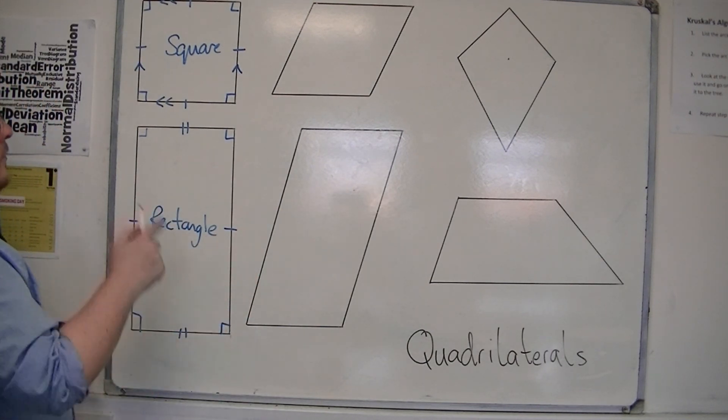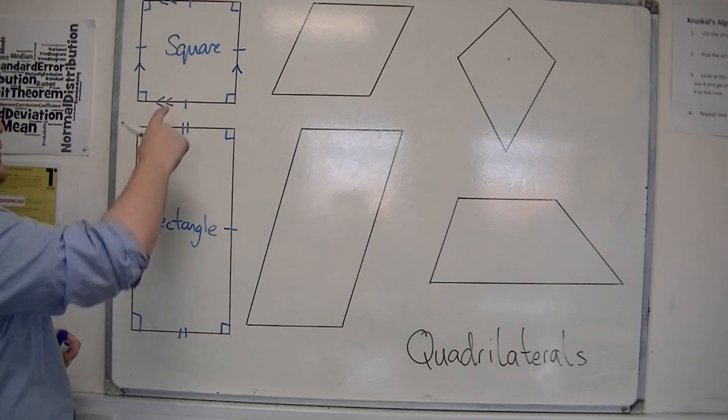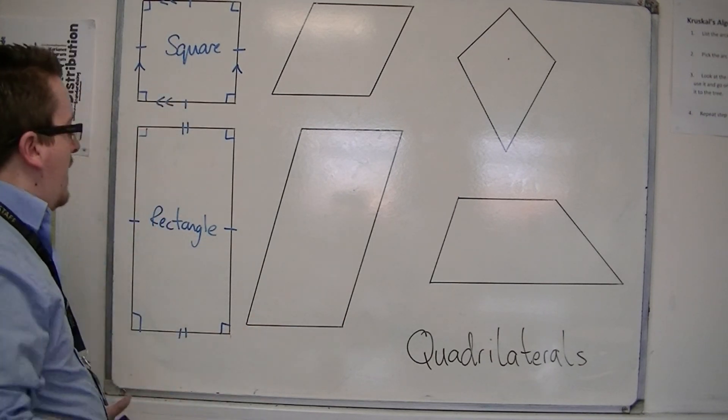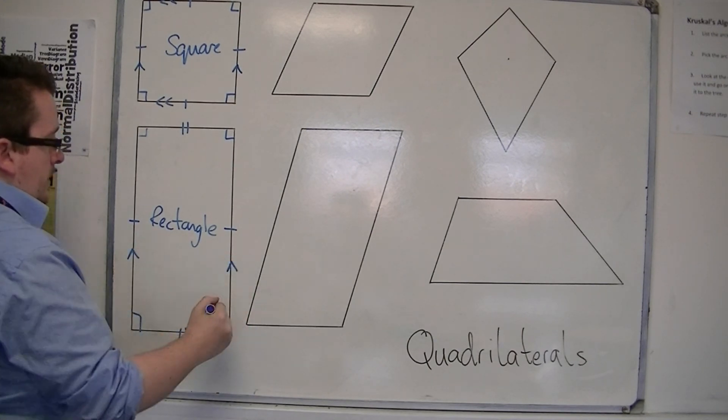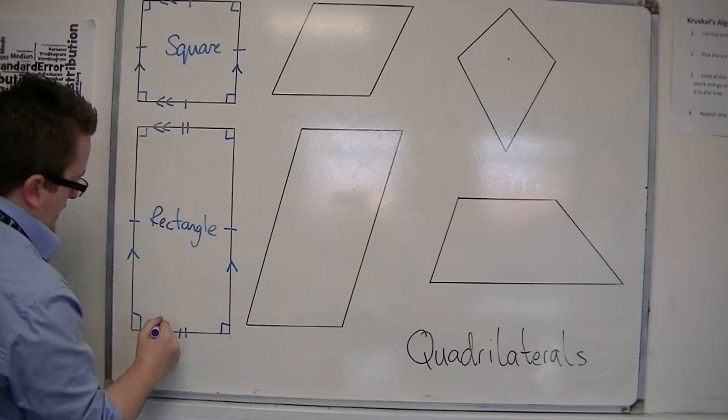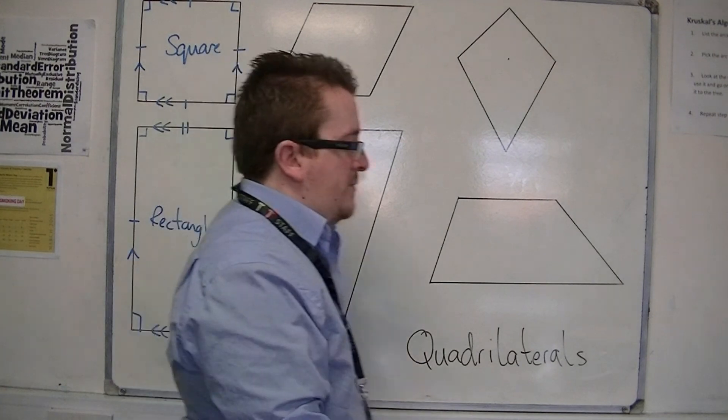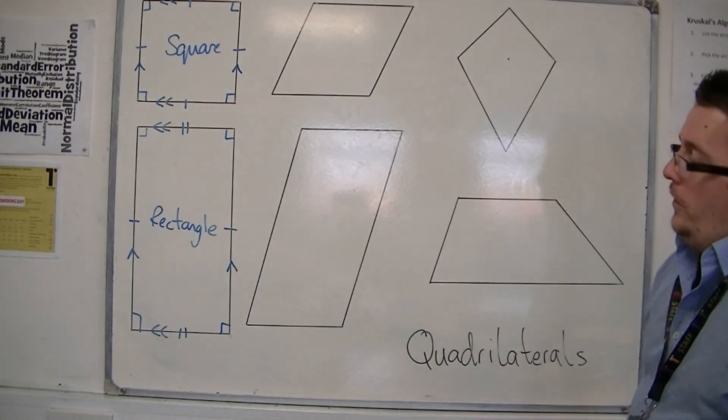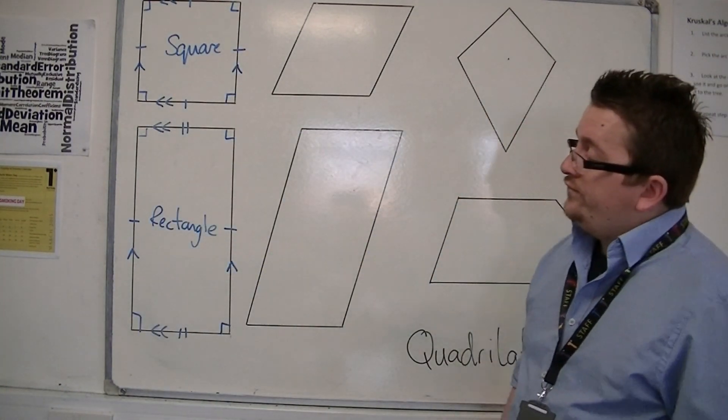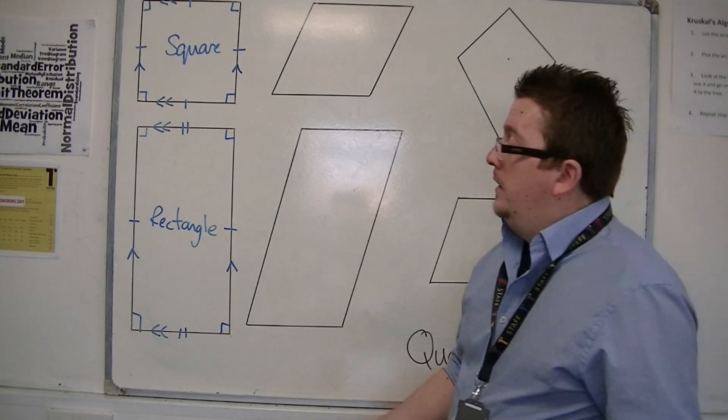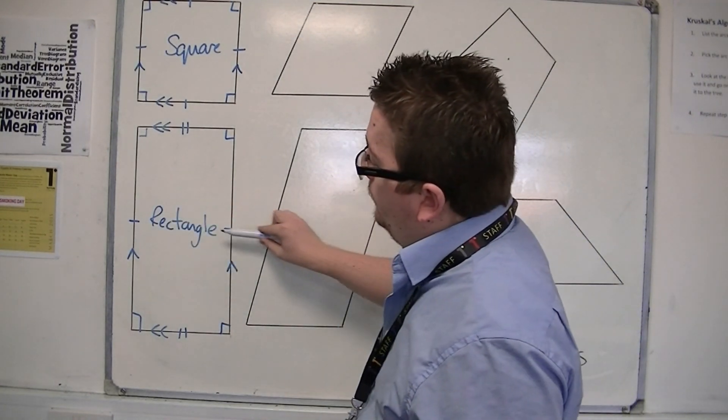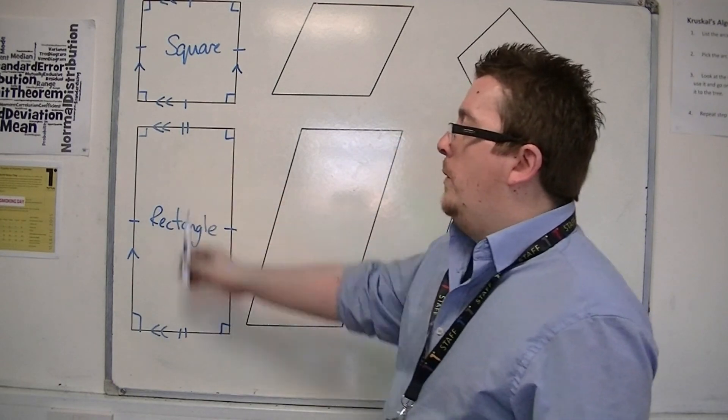It also has a pair of parallel sides, as did the square. So we've got one there, and then we've got one there. So two pairs of parallel sides. Lines of symmetry, this one only has two. So it's got one going through the middle, and it's got one going through the middle lengthways.